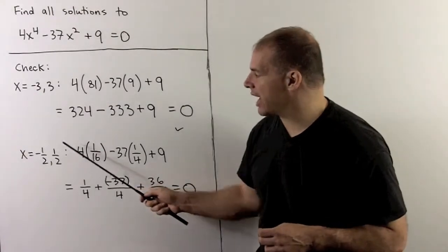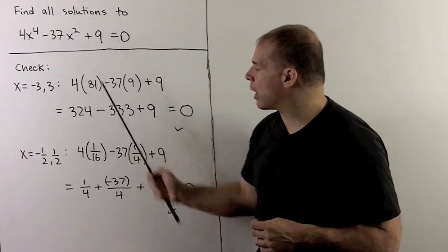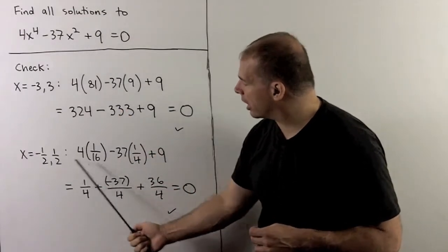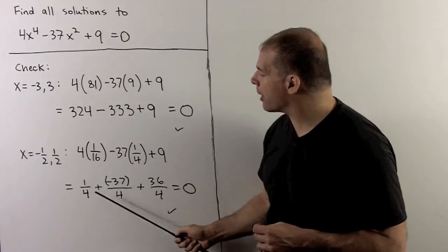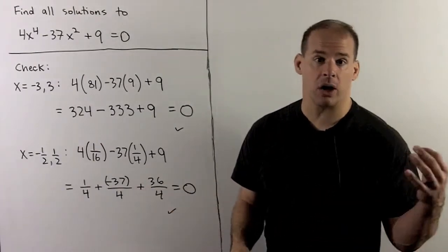Likewise, I can check minus 1 half and 1 half at the same time. The minus sign goes away. 1 half to the fourth power is 1 16th. 1 half squared is 1 quarter. Here, we can put everything over a 4. Then, we see that this is also going to go to zero. So, these two solutions check also.